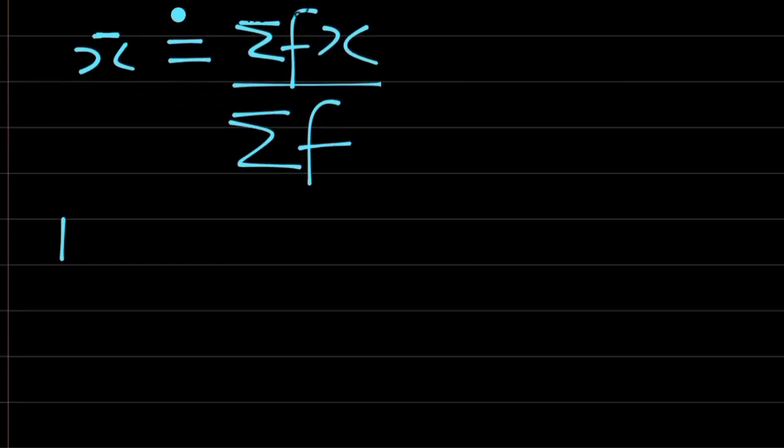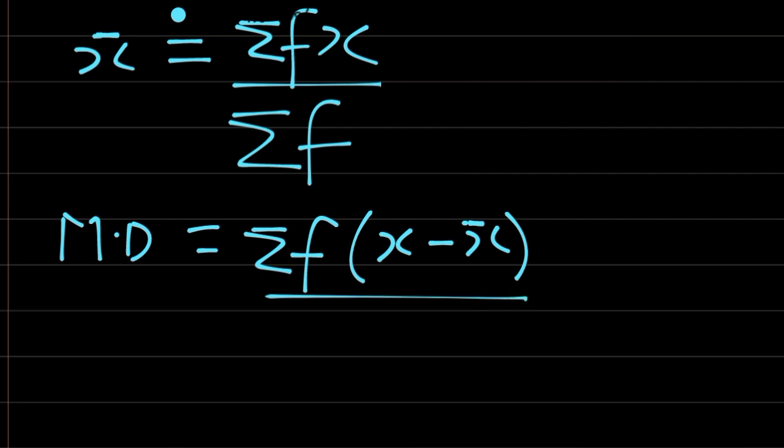Then there is something called mean deviation. For us to have mean deviation, we have summation of f into bracket x minus mean. The only thing that I have changed from the first equation and the second equation is we have changed x to x minus x bar.